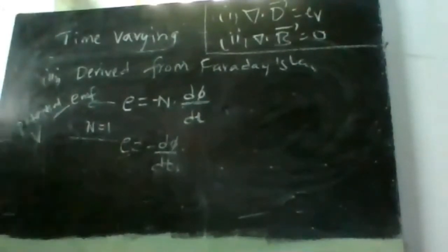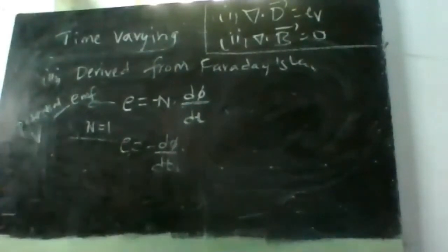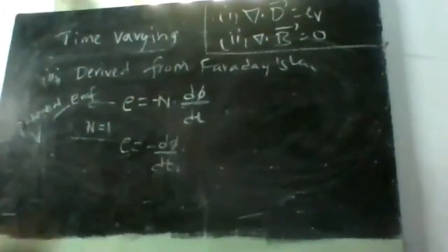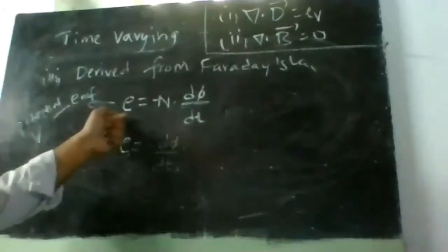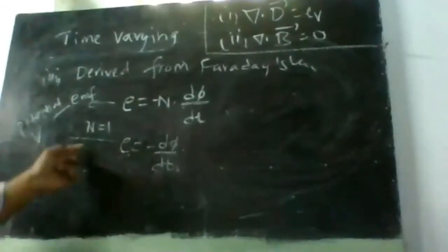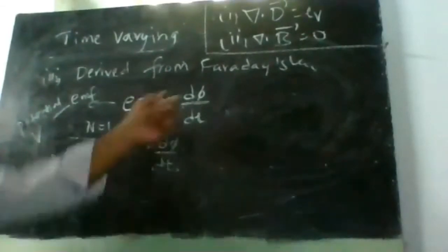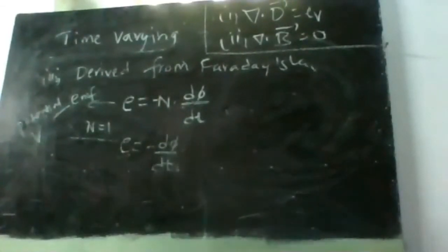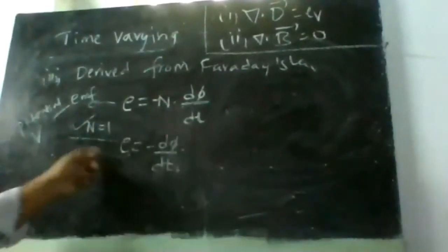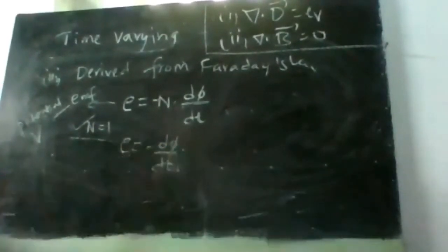The other two equations will vary. The third equation is derived from Faraday's law. Faraday's law is given by E = −N·dφ/dt, where E is the EMF, N is the number of turns, and φ is the flux. If N = 1, then E = −dφ/dt.